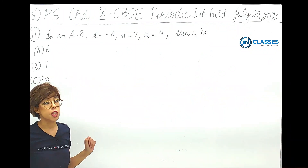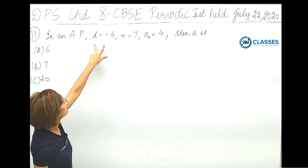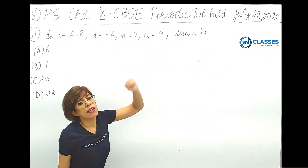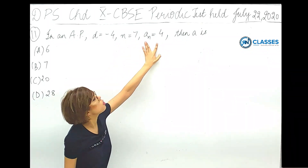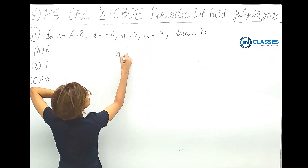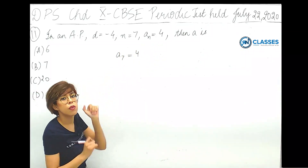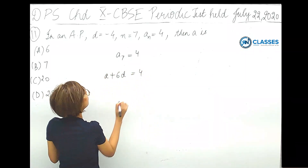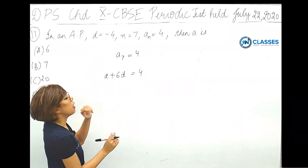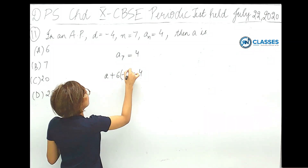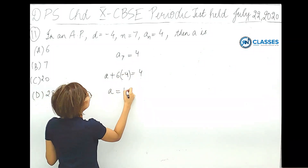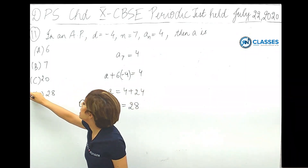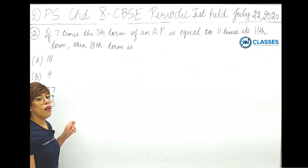The next question: in an AP, d equals minus 4, n equals 7, and the last term AL equals 4. Since n is 7, the 7th term A7 equals 4. So a plus 6d equals 4, substituting d equals minus 4: a plus 6 into minus 4 equals 4, so a equals 4 plus 24 equals 28. Option C is correct.